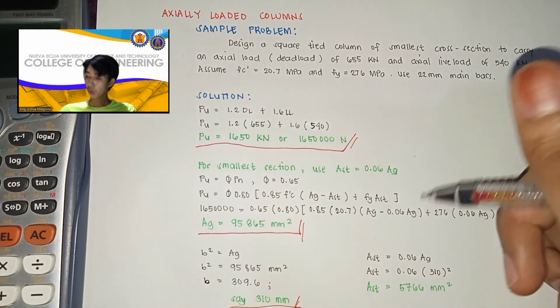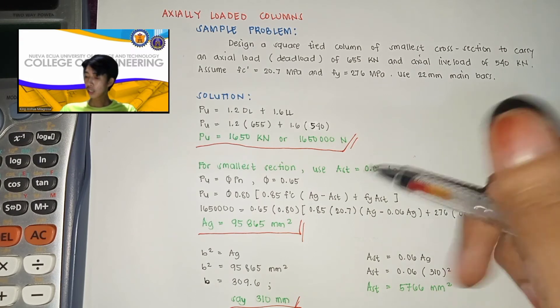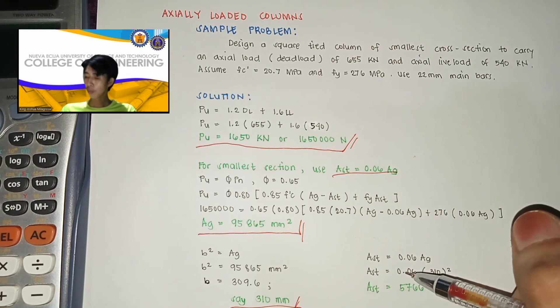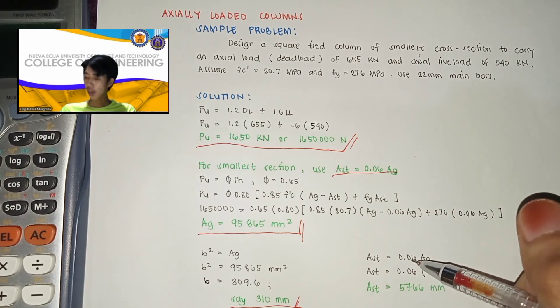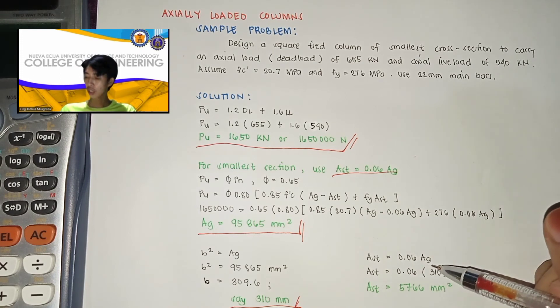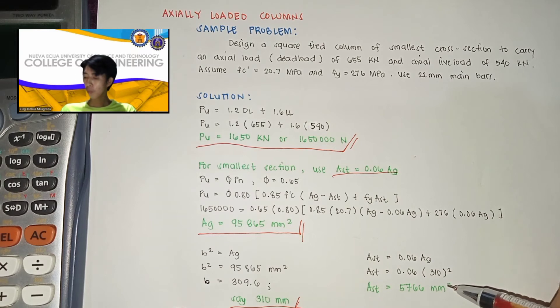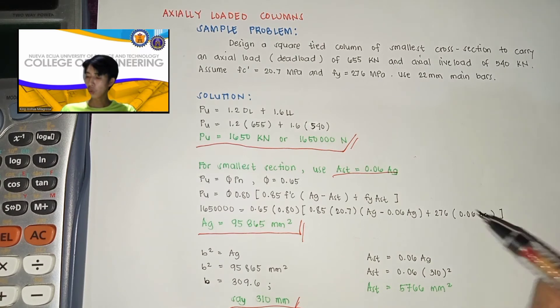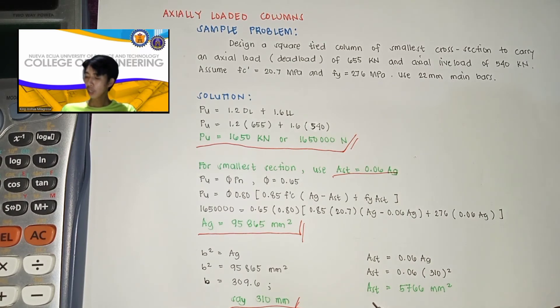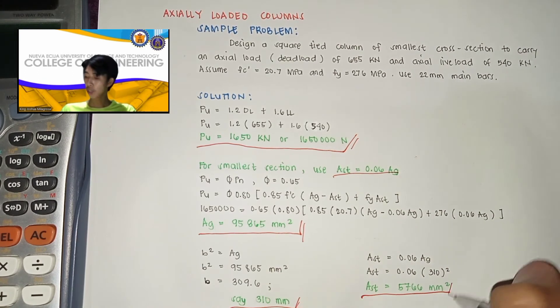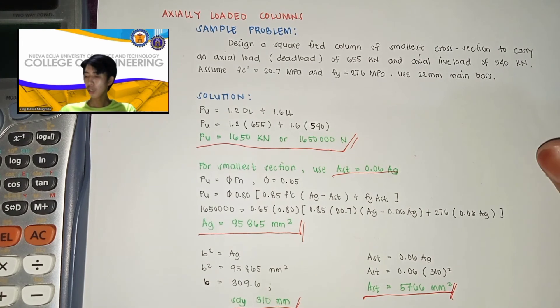So using this equation kanina which is yung area ng steel, is equal now yan sa 0.06 gross area. Then AST now is equal to 0.06 multiplied by 310 squared. So yung value natin ngayon ng AST is equal to 5,766 mm squared.